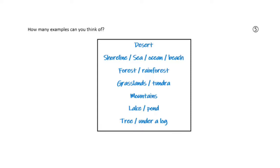I came up with desert, shoreline, sea, ocean, beach, forest, rainforest, grasslands, tundra, mountains, lake, pond. You can also have microhabitats like trees or under a log, for example.